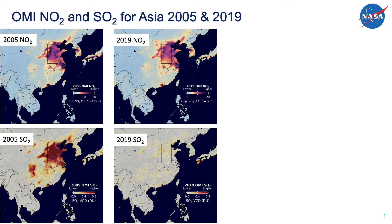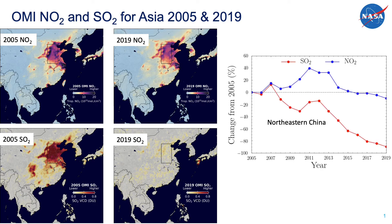Taking a closer look at the annual time series for the area inside the black box in northeastern China, the blue time series line shows that NO2 levels in this region rose until 2011 and then came back down to the original NO2 emission levels a few years later. The red SO2 time series for northeastern China shows a very different trend — SO2 dropped almost every year and has been reduced by almost 90% by 2019.